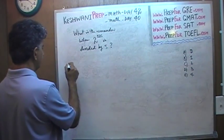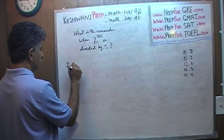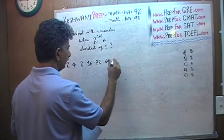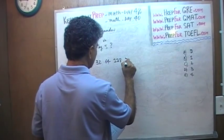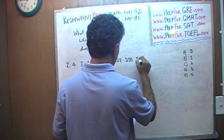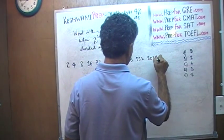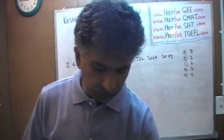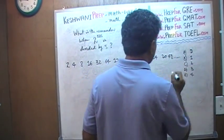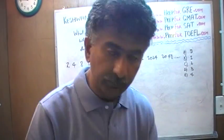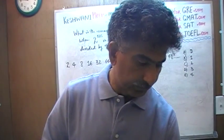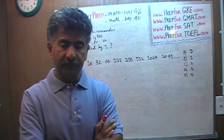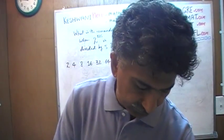Let's take a look at what we have here: 2 raised to 1, 2 raised to 2, 2 raised to 3 — that's 2, 4, 8, 16, 32, 64, 128, 256, 512, 1024, 2048. Let's see what happens when we divide these numbers by 5, because what we're trying to ascertain is whether there is a pattern here — and of course there has to be a pattern.